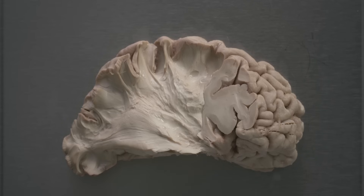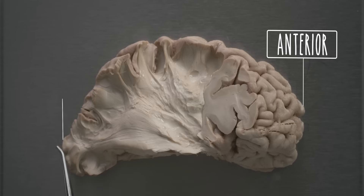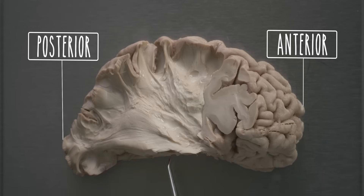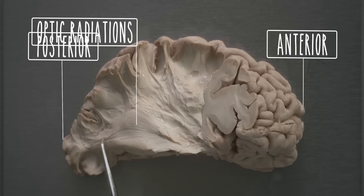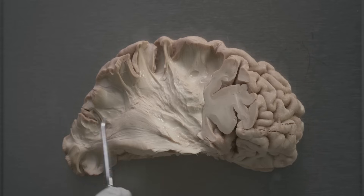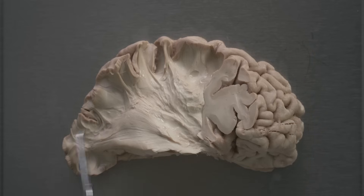In this specimen, we have dissected away the lateral parts of the cortex. This is anterior, and this is posterior. This is where the lateral geniculate nucleus is, and here are the optic radiations projecting to the primary visual cortex in the occipital lobe. Note that these optic radiations go to the part of the primary visual cortex that is superior to the calcarine sulcus.